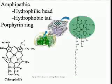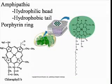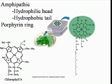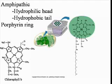Thylakoid membranes are made up of a phospholipid bilayer. Embedded in these membranes are photosynthetic pigments. These pigments, like phospholipids, are amphipathic, meaning that they have a hydrophilic head and hydrophobic tails. It is these pigments that convert light energy into usable chemical energy. The hydrophilic head of chlorophyll A and B has a magnesium ion in the middle. These two heads are called the porphyrin ring, which is the location where light energy is converted into usable chemical energy.